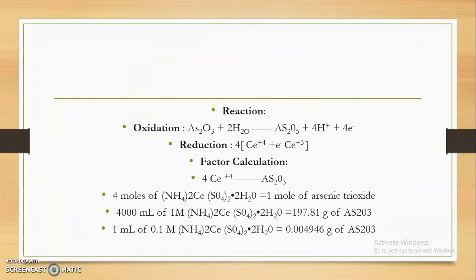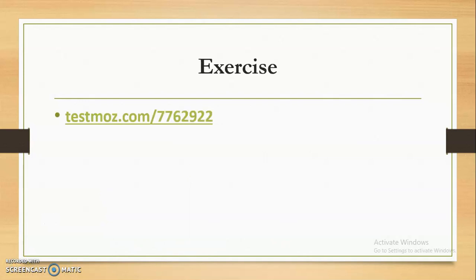The reaction involves oxidation and reduction, where 4 moles of cerium are equivalent to 1 mole of arsenic trioxide. So 4 moles of ceric ammonium sulphate equals 1 mole of arsenic trioxide. The final factor: 1 ml of 0.1 molar ceric ammonium sulphate is equivalent to 0.004946 gram of arsenic trioxide. This concludes the preparation and standardization of ceric ammonium sulphate. You are given an exercise: copy the provided link, paste it, and submit your answers.